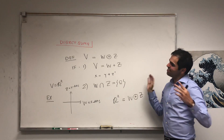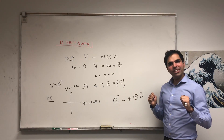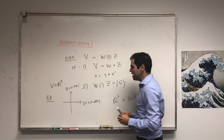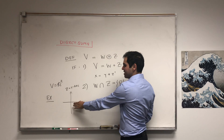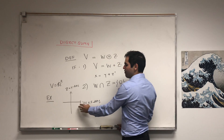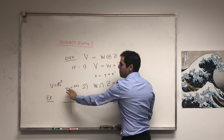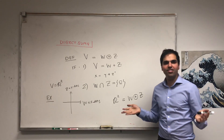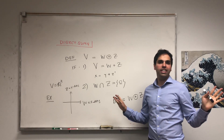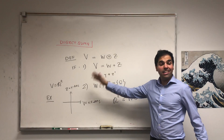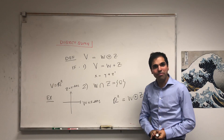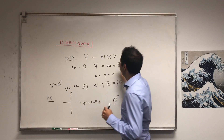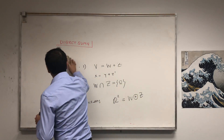But this is not why we're here today. Today I want to show something really cool: if you start with a basis of W and a basis of Z, usually if you add two bases together you will get gibberish, but it turns out that if you have a direct sum, you will actually get a nice basis. So here's this nice exercise.